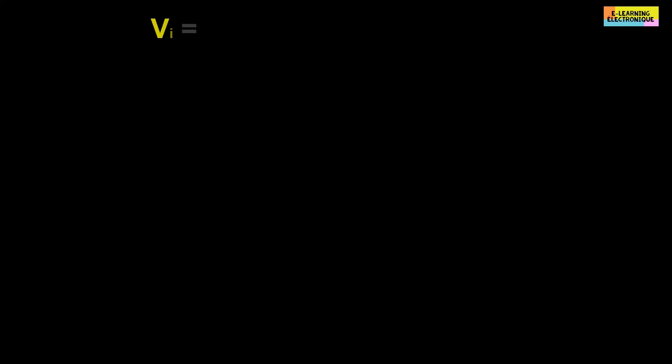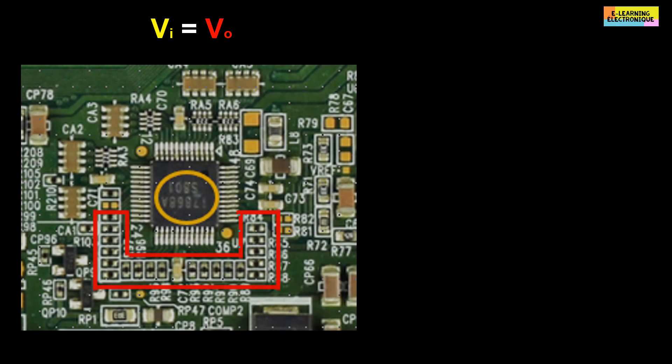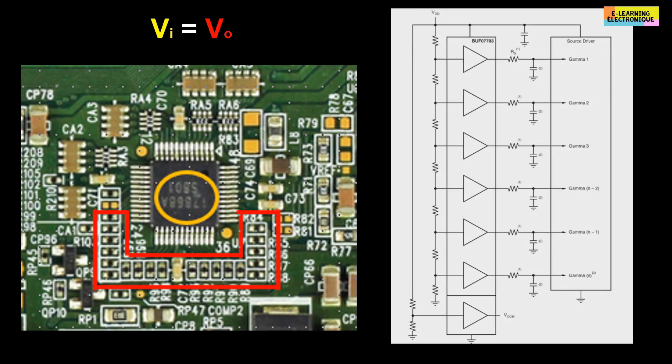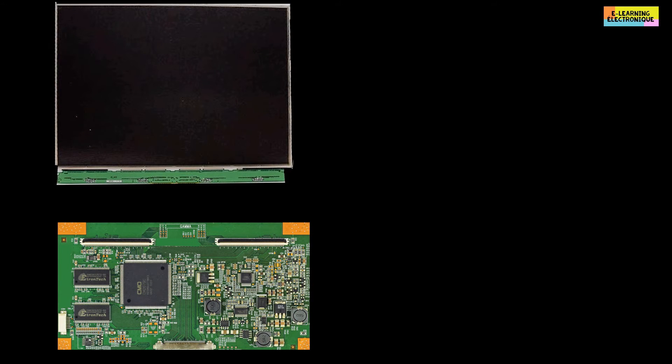If the input voltage VI is equal to the output voltage VO, then why bother with such a setup? We see on this Tcon board that there is a series of resistors around the gamma chip. When you look at the schematic on a datasheet, you can see that the resistors are put in series and form a voltage divider. So, in reality, the gamma voltages are produced in this example outside the gamma chip thanks to a voltage divider.